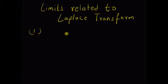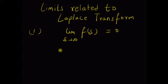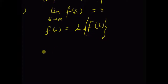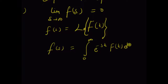The first one we want to prove is: limit as s tends to infinity of F(s) is equal to 0. Here F(s) is the Laplace transform of a function f(t). By using the definition of Laplace transform, we have F(s) equal to the integral from 0 to infinity of e^(−st) f(t) dt.